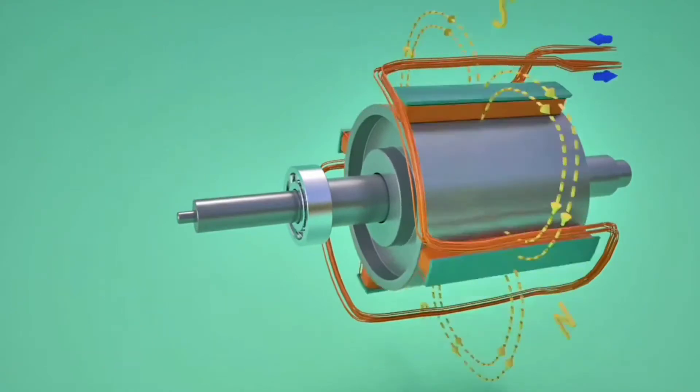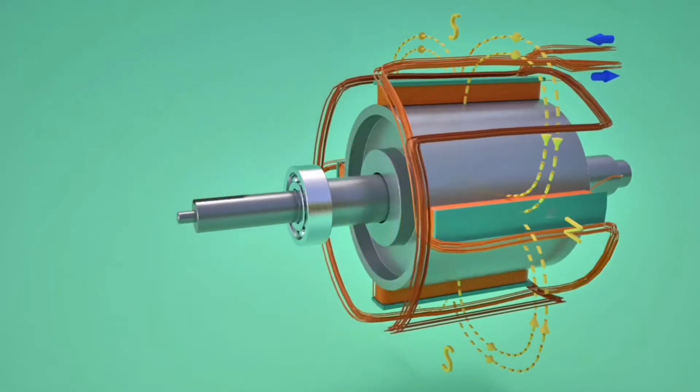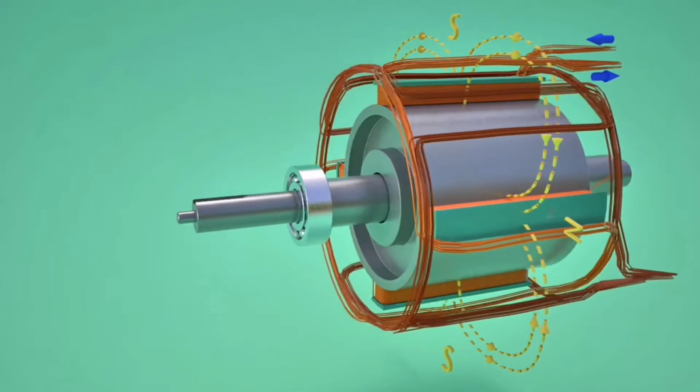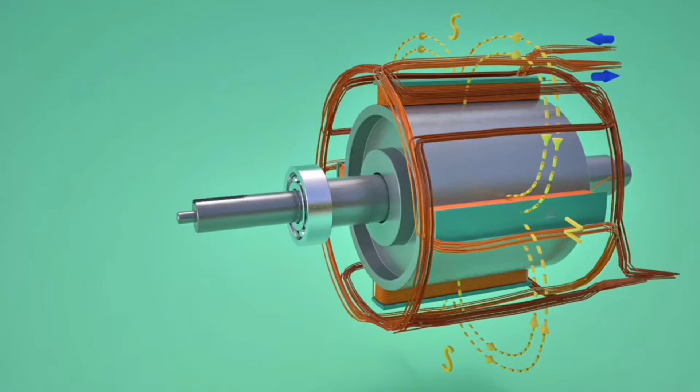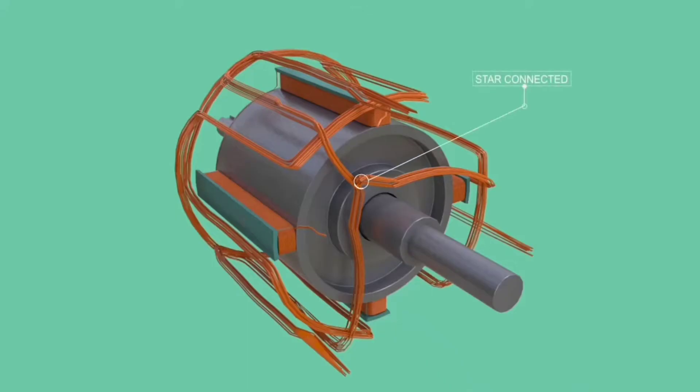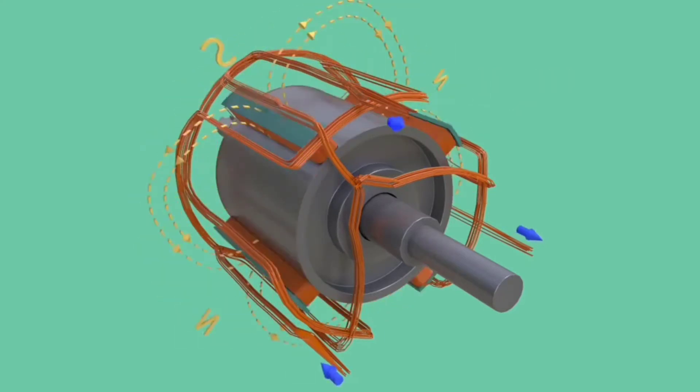For producing three phase AC current, two more such armature coils which are in 120 degree phase difference with the first is put in a stator winding. Generally one end of these three coils are star connected and three phase electricity is drawn from the other ends. Neutral cable can be drawn from the star connected end.